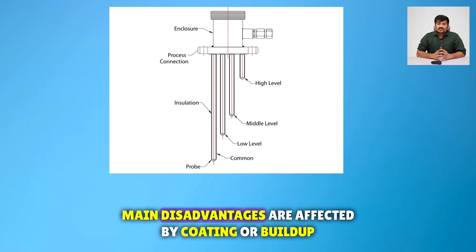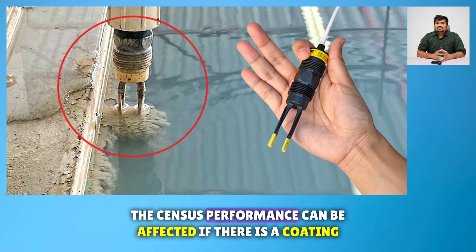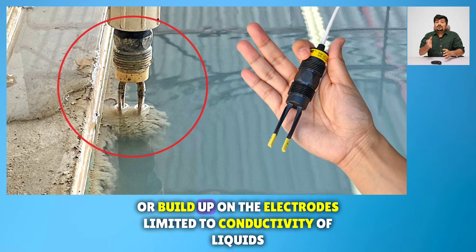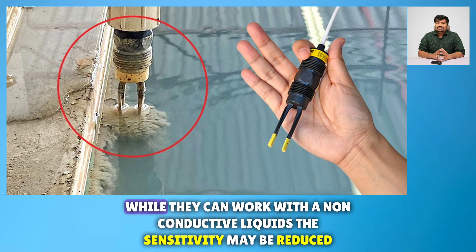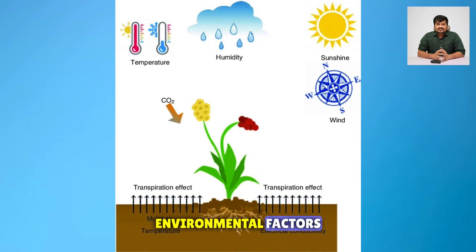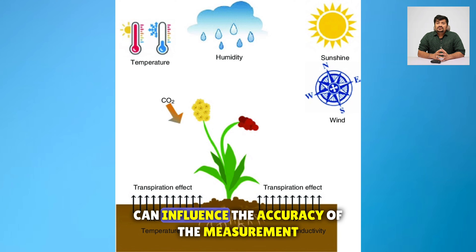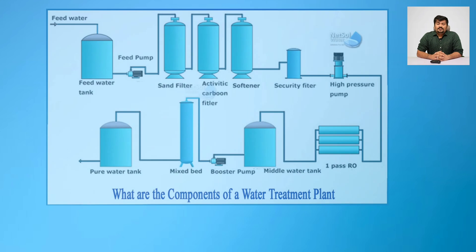The main disadvantages are: the sensor's performance can be affected if there is a coating or buildup on the electrodes. While they can work with non-conductive liquids, the sensitivity may be reduced. Additionally, changes in temperature or the presence of contamination can influence the accuracy of the measurement.